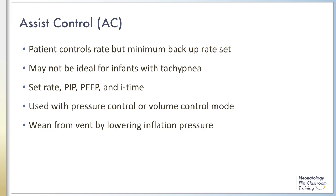Assist control ventilation allows the patient to control the rate but provides a minimum backup rate if there is inadequate or absent spontaneous breaths. This mode may not be ideal in an infant with tachypnea because all breaths will be initiated by the infant and fully supported to the set PIP. In these instances, the infant would be at higher risk of developing respiratory alkalosis and overinflation.